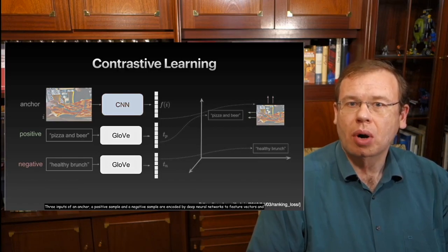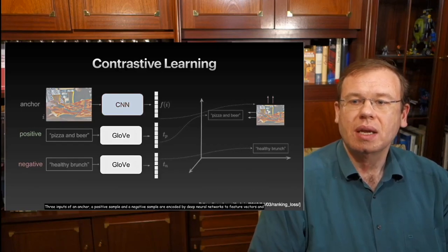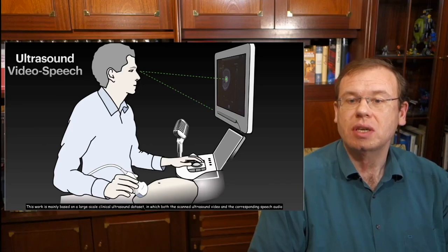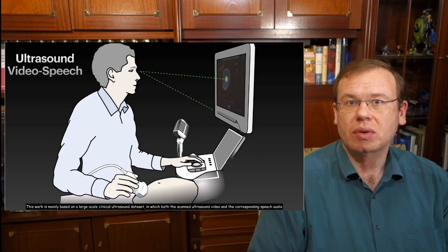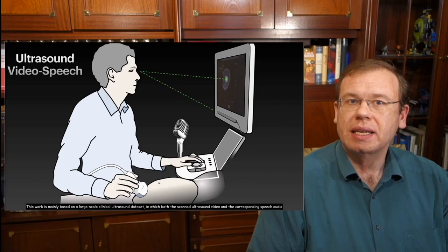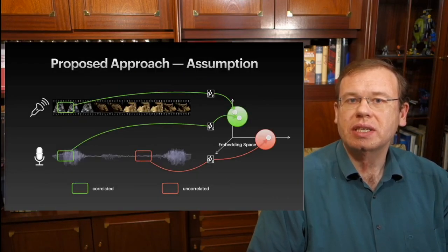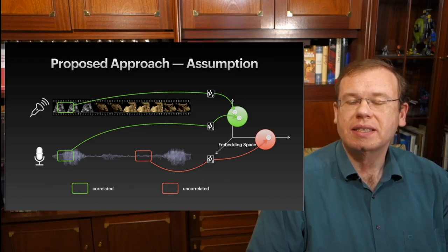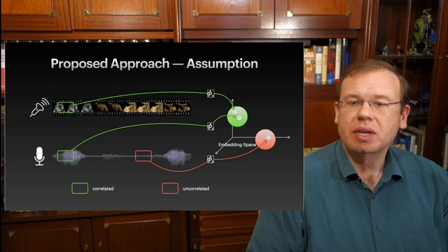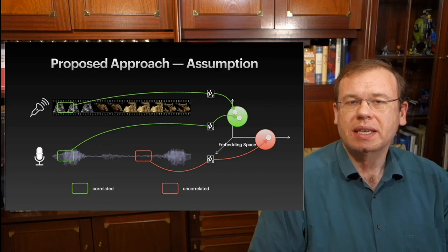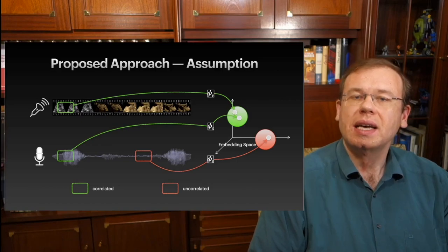So now you process the image with a CNN and you convert the language into a corresponding representation. Here they chose glove, the global vector representation for words. And then both of them can be mapped into a feature space. And the contrastive learning procedure will try to align the feature vectors of the corresponding samples to be close to each other. Now, they are not working with the example from computer vision here, but they are working with ultrasound and video speech. So here they recorded the speech of a physician working on the ultrasound device and they recorded the image data in conjunction with the speech data.